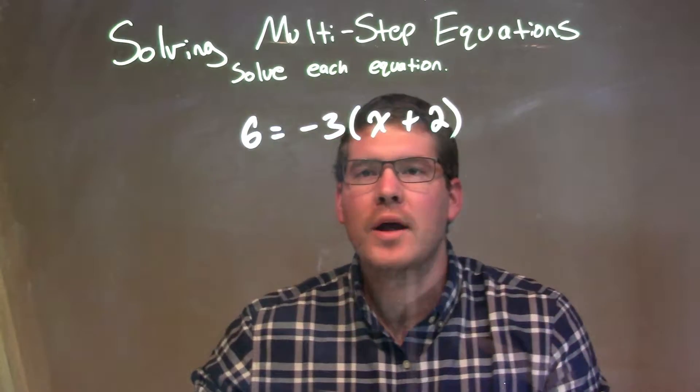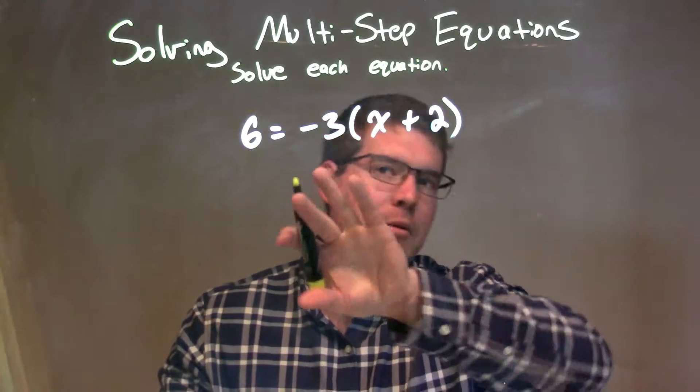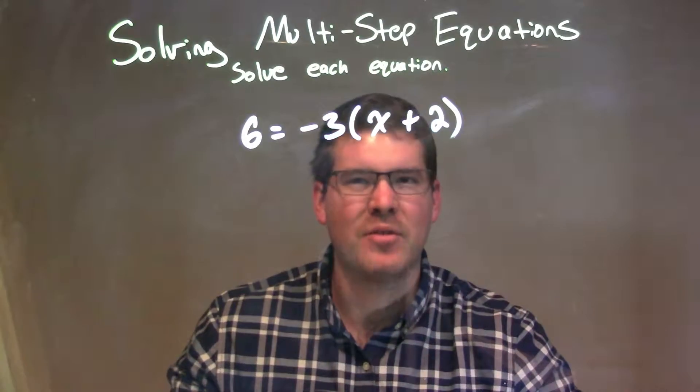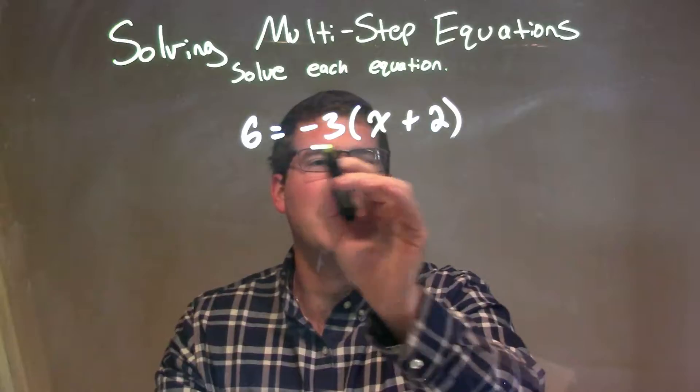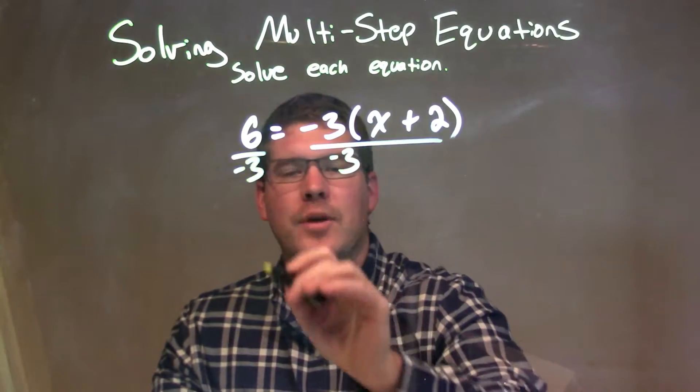Well, what I see here is I see a multiplication. I see a negative 3 times whatever this is in parentheses. Normally I would just distribute that out. We'll see something different this time. I'm going to divide by negative 3 to both sides. Since there's that multiplication, I'm going to divide it by negative 3.